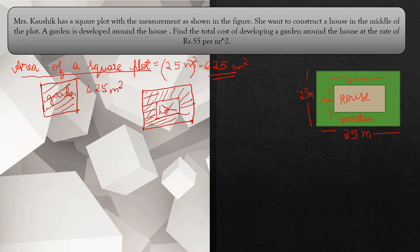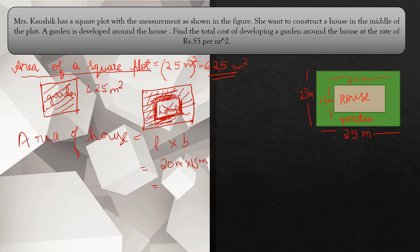We don't want the house area, but to find the remaining area we need to find the area of the house. The house has breadth 15 meters and length 20 meters. So area of house equals length into breadth, which is 20 meters into 15 meters, equal to 300 meter square.